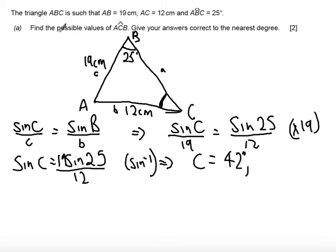Now it says to find the possible values of angle ACB. So there is another possible value. In order to find this I need to use a cast diagram. So I'm going to quickly sketch myself a cast diagram. And what I'm going to do because this is sine I'm going to measure 42 degrees into the sine quadrant. So there's my 42 degrees.